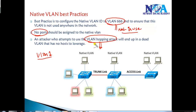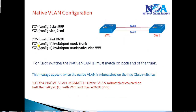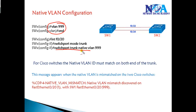To mitigate attacks, if any traffic comes in through the native VLAN it should get dropped — that's the recommended approach. To change the native VLAN, use the command 'switchport trunk native vlan 999'. One important thing: on Cisco switches, the native VLAN must match on both sides of the trunk link. That is mandatory.